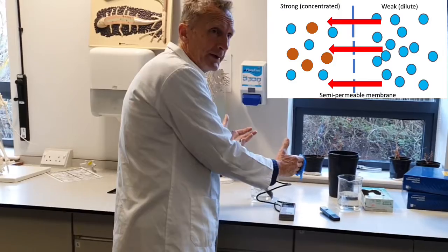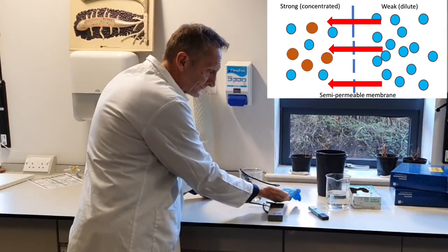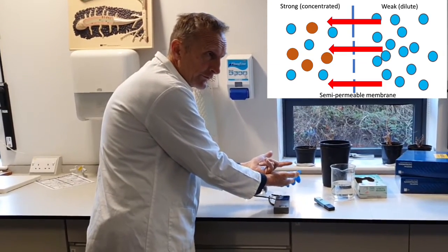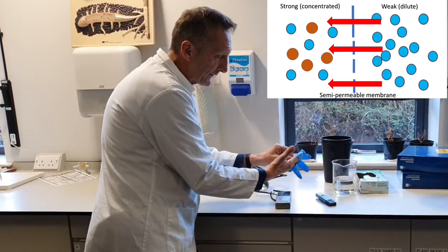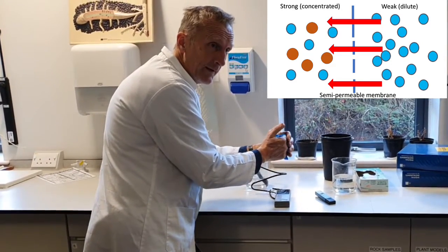If it's watery outside the plant, water passes in and the plant's happy. If this gets too salty, water passes out of the plant. That's called exosmosis or reverse osmosis. The cell membrane pulls away from the cell wall and the plant collapses and can't recover.